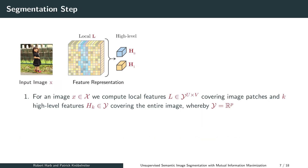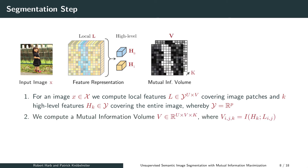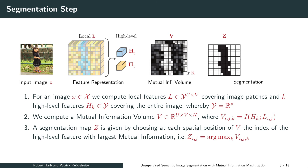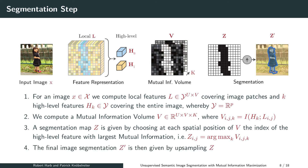In the segmentation step, we take the following procedure. For an image, we compute local features covering image patches, and for each class a high-level feature covering the entire image. Notably, the local and high-level features have the same dimensionality. Next, we compute a mutual information volume. The first two dimensions correspond to the spatial resolution of the local image features, and the third dimension equals the number of classes. Each volume entry is given by the mutual information between a local feature and one of the high-level features. We then choose at each spatial position the index of the high-level feature with the largest mutual information, and the resulting segmentation is upsampled to the input image resolution.